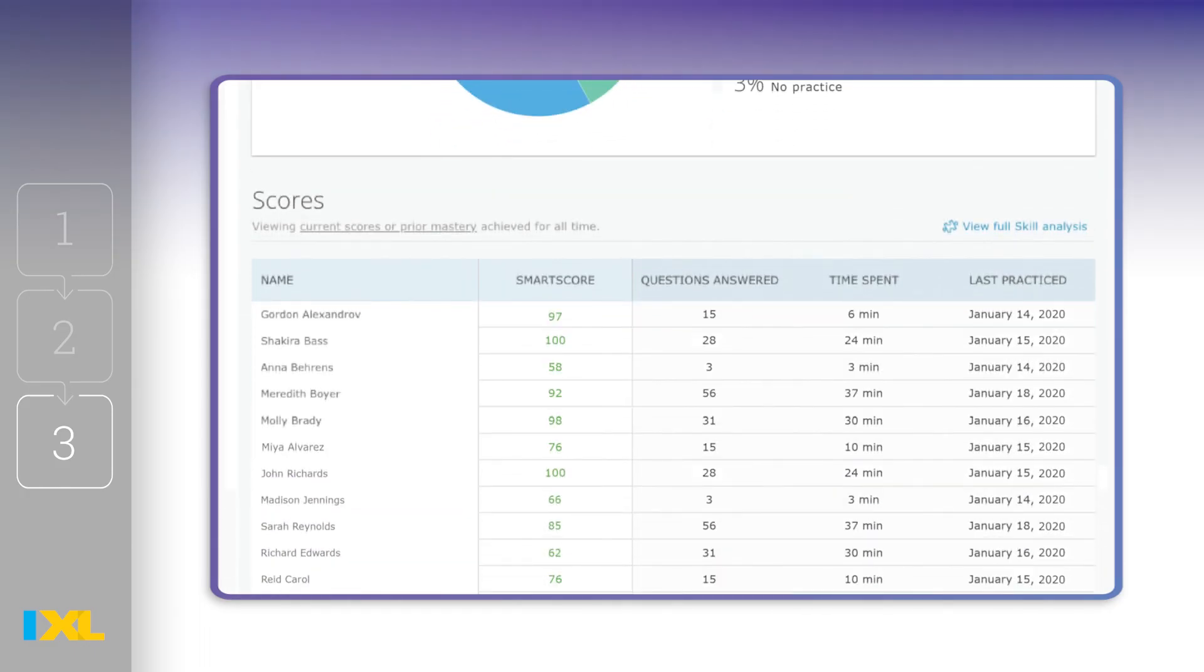You may even find that some students kept going and reached for mastery. You can also quickly scan for students who didn't quite reach 80. These students may need a little additional assistance or reteaching tomorrow in class.